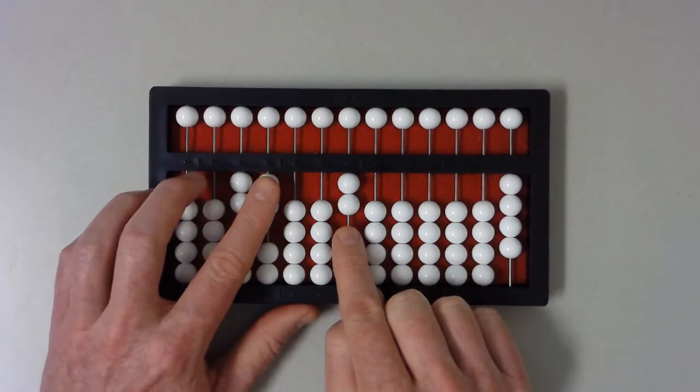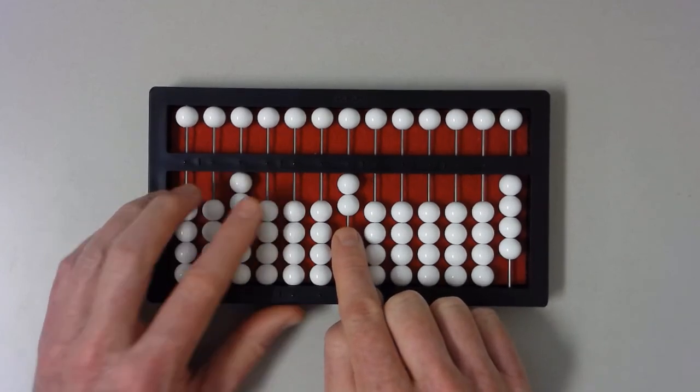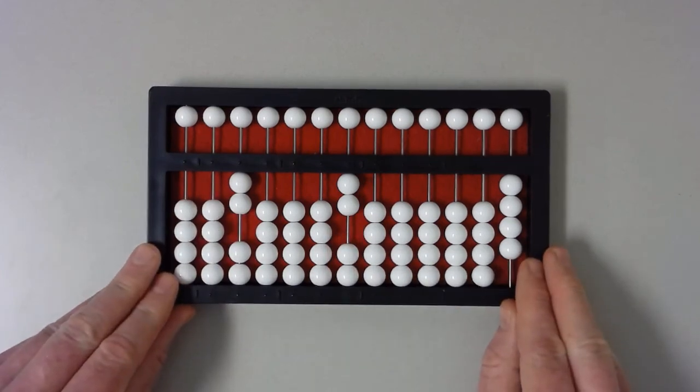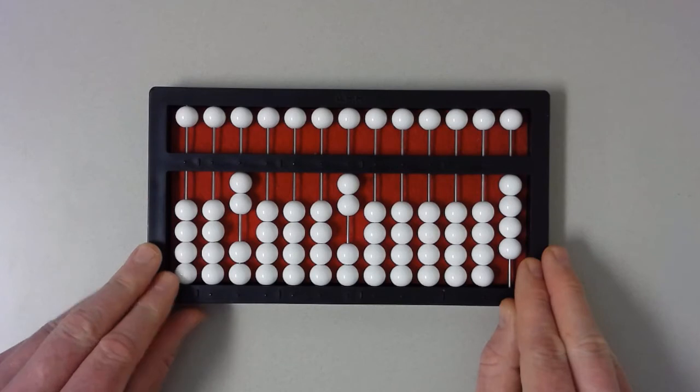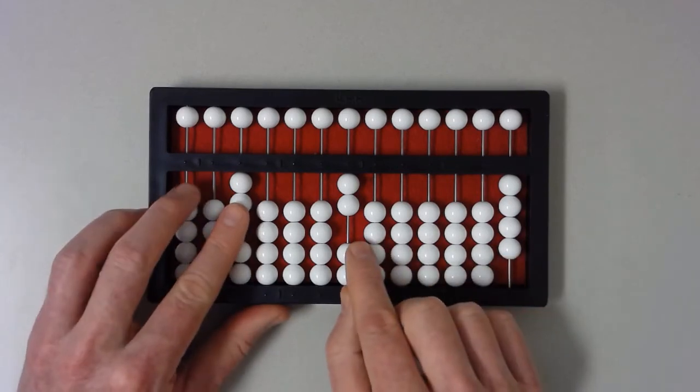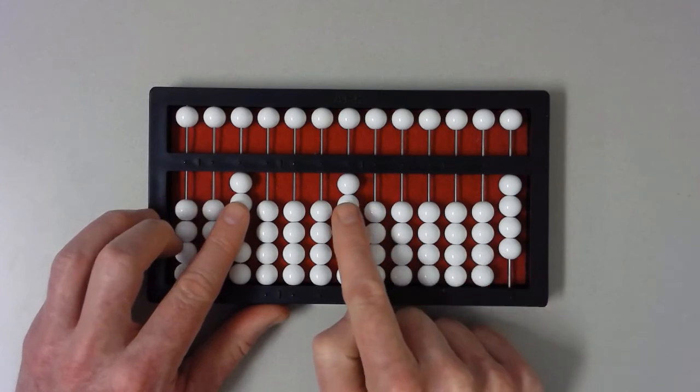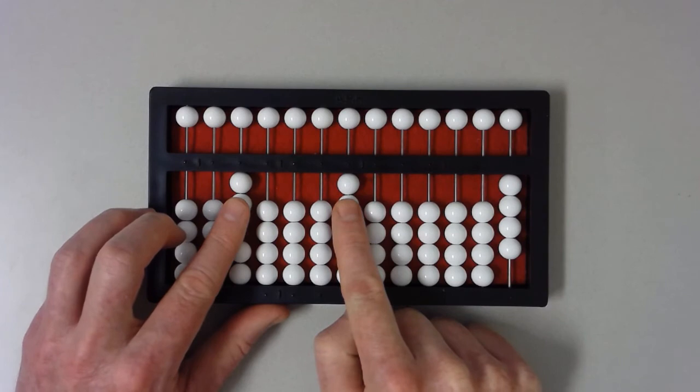Clear the value of two, the two one beads, in the ones column in the billions section from the multiplicand. We are left with a two in the tens column, or twenty. That also gets multiplied by two, the multiplier. Twenty times two equals forty.